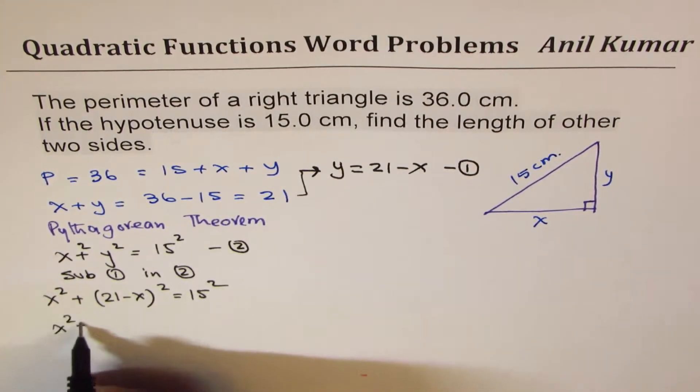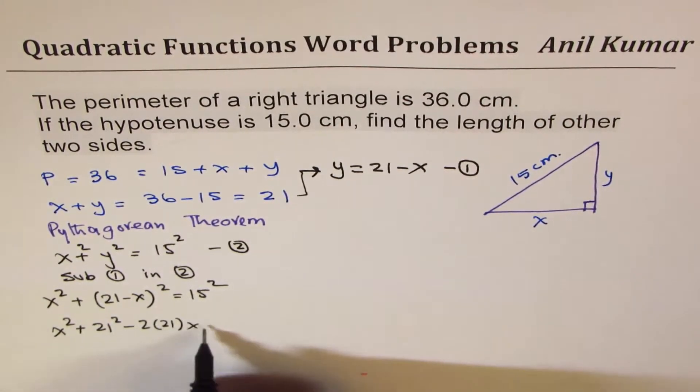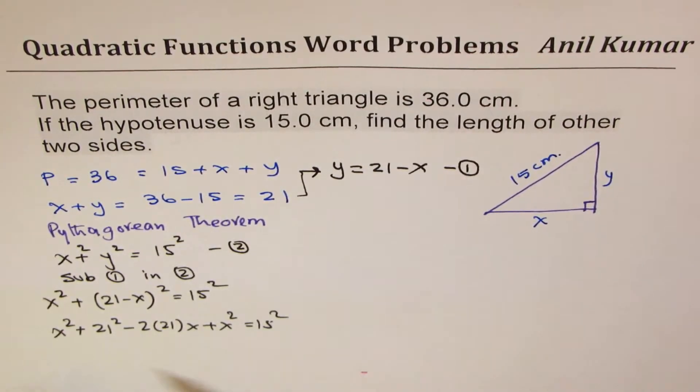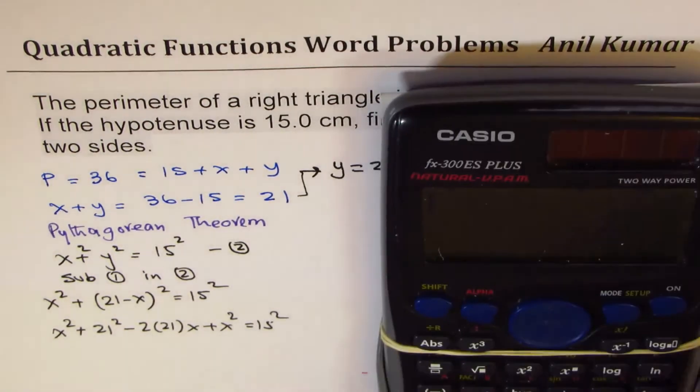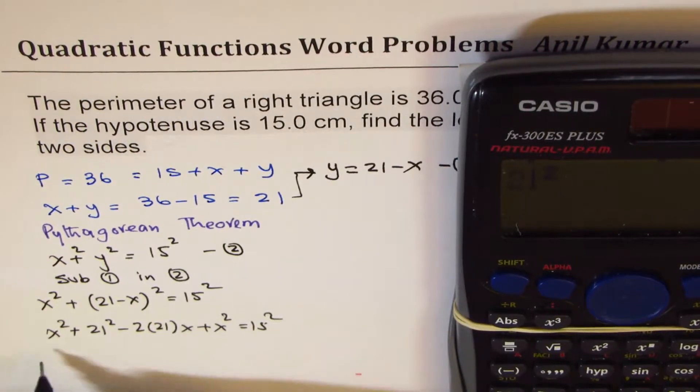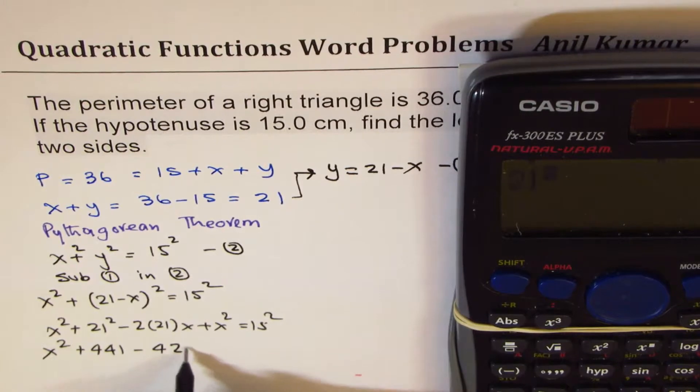So we get X square plus 21 square minus 2 times 21 X plus X square equals to 15 square. 21 square is 441 so you can write this as X square plus 441 minus 42X plus X square equals to 15 square which is 225.